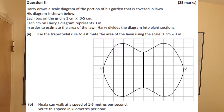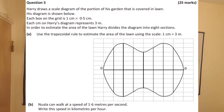Hello, this is question 5 from the 2009 Ordinary Level Leaving Certificate Paper. You can find a link to the image of this question in the description below. As you can see on the screen, it's made up of two parts, A and B. In part A, we're going to use the trapezoidal rule to estimate the area of this shape. And in part B, we're simply going to change the units of a number.